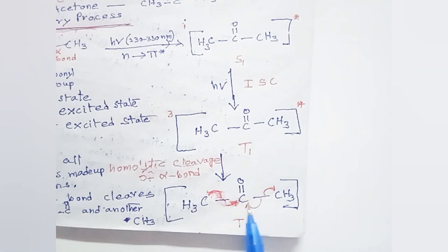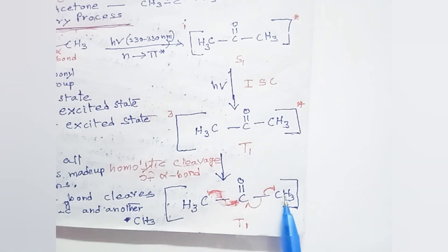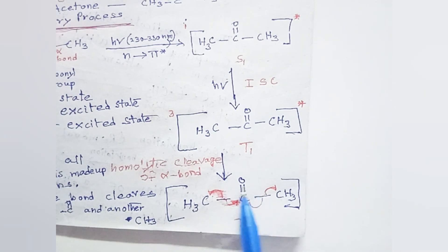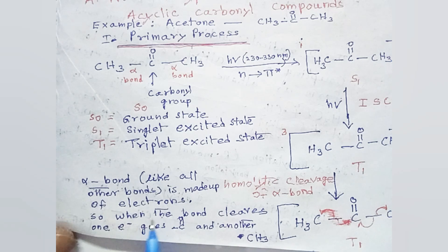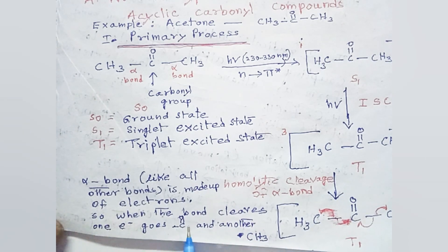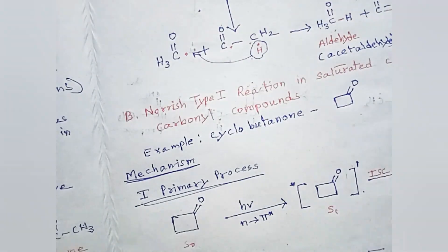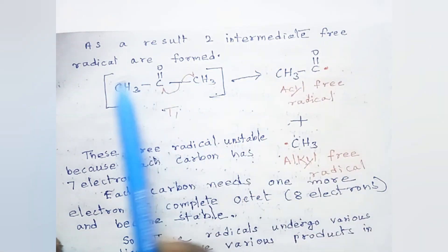In the triplet state, one of the alpha bonds — there is one alpha carbon bond on each side — will cleave to form two radicals. The alpha bond, like all other bonds, is made up of two electrons. When the bond cleaves, one electron goes to C=O and another goes to CH₃. As a result, two intermediate free radicals are formed.